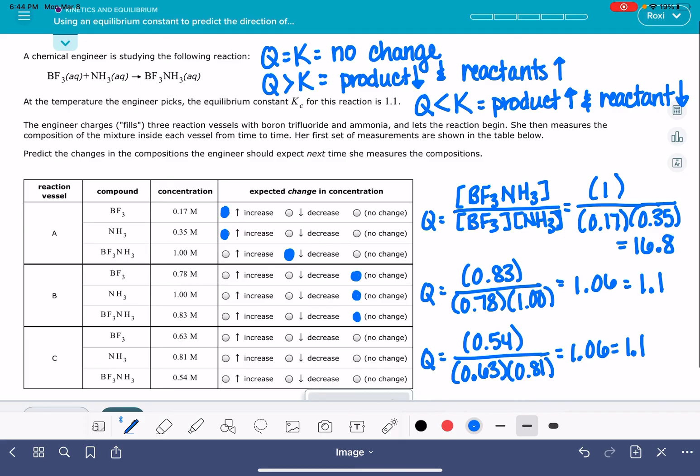0.54 divided by 0.63 times 0.81 is 1.06. Again, when we round it to just one decimal place, we end up with the same value of K, which means it's already in equilibrium, no change.